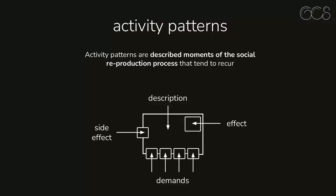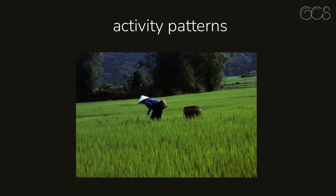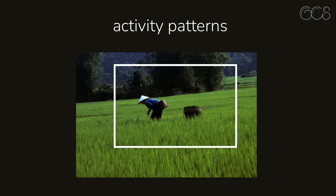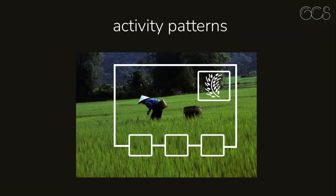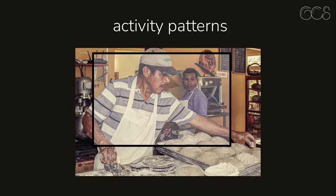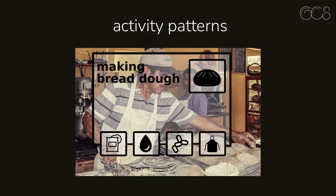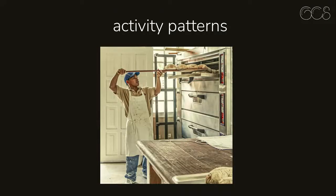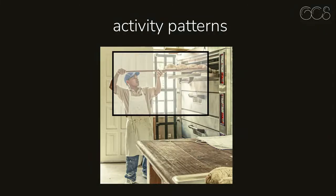Let's take a closer look. Let's take this farmer on her field. We isolate this activity from its environment and ask: what is the effect? Harvested rice. And then we ask: what is the demand necessary for it? First, a rice field, then a large basket, and apparently also a small basket. We call the activity pattern "rice harvest" and add a description of which steps have to be taken so that the effect can arise from the demand. Here we are in a bakery. We isolate the activity from its environment and ask what is the effect — it is a preformed bread dough. The demand is flour, water, yeast, and maybe that apron. We call it "making bread dough."